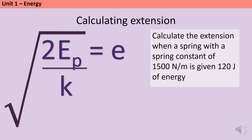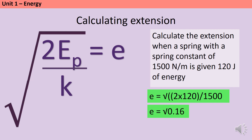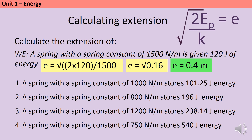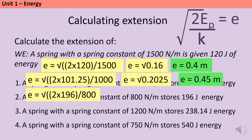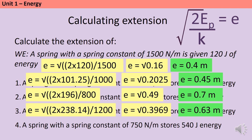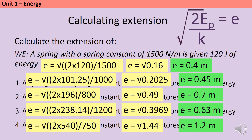To find extension when a spring with k = 1500 N/m is given 120 joules of energy: 2 × 120 = 240, divide by 1500 to get 0.16, then √0.16 = 0.4 metres. For the four practice questions: question one gives √0.2025 = 0.45 m; question two gives √0.49 = 0.7 m; question three gives 0.63 m; and question four gives 1.2 m.